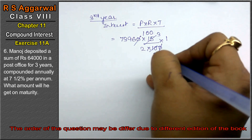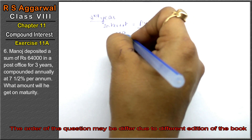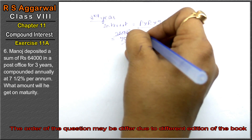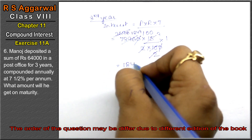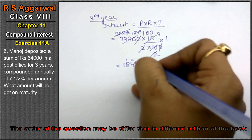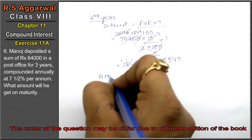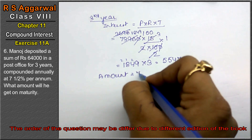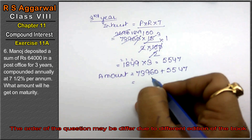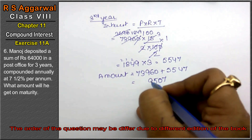Calculating 73,960 into 15 upon 200: working through the multiplication step by step, we get the third year interest as 5,547. So the final maturity amount is 73,960 plus 5,547, which gives 79,507 as the answer.